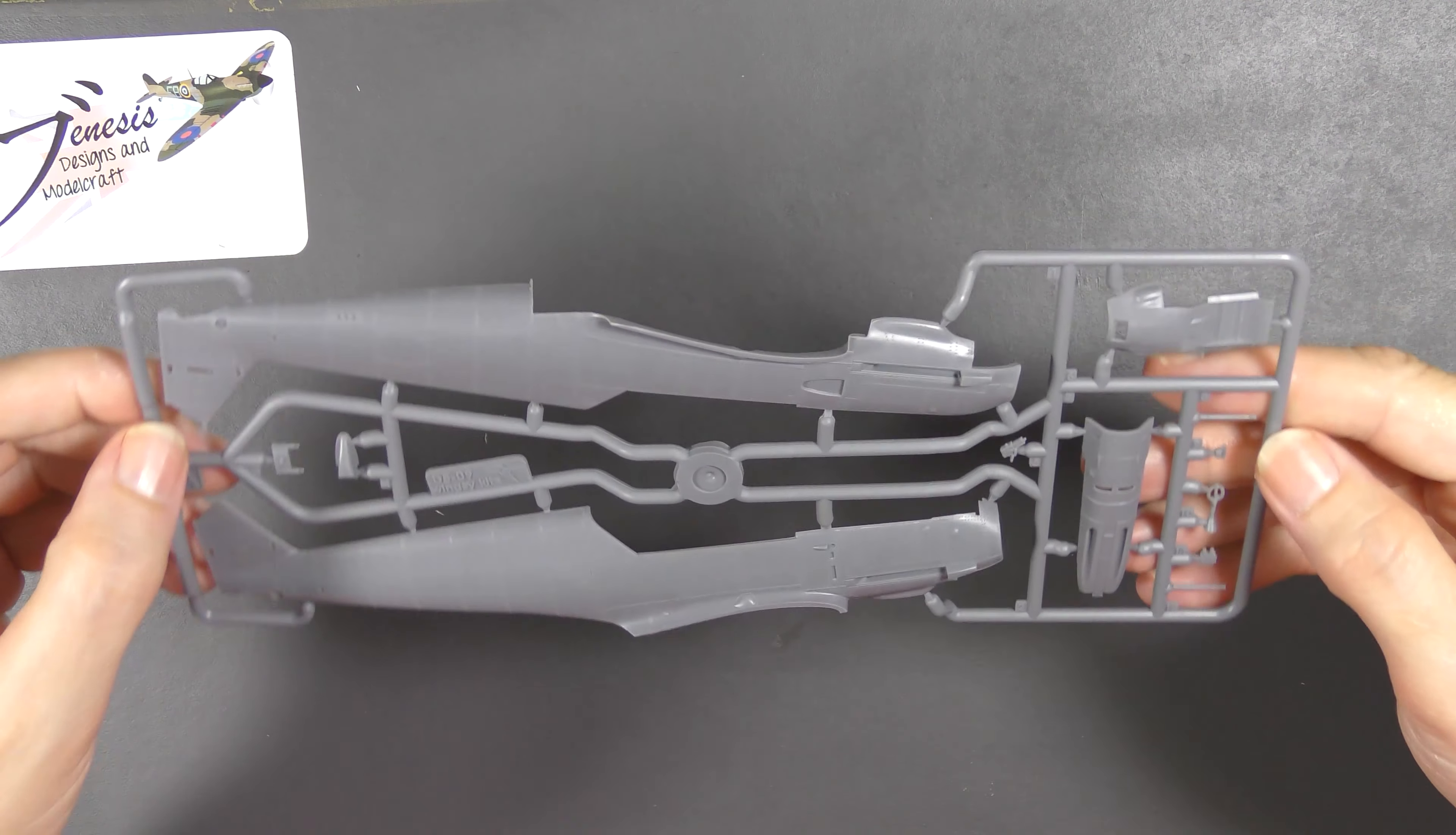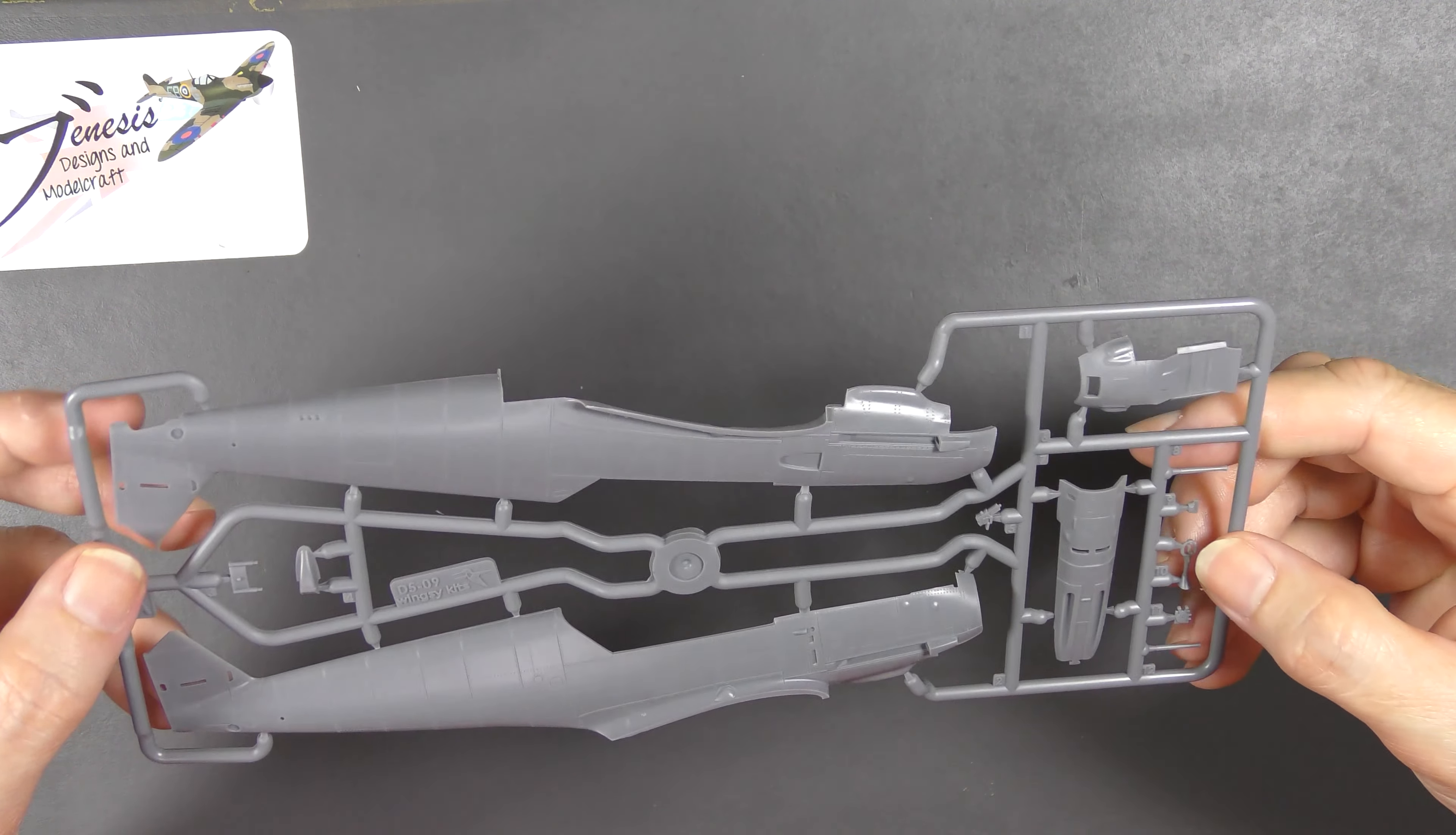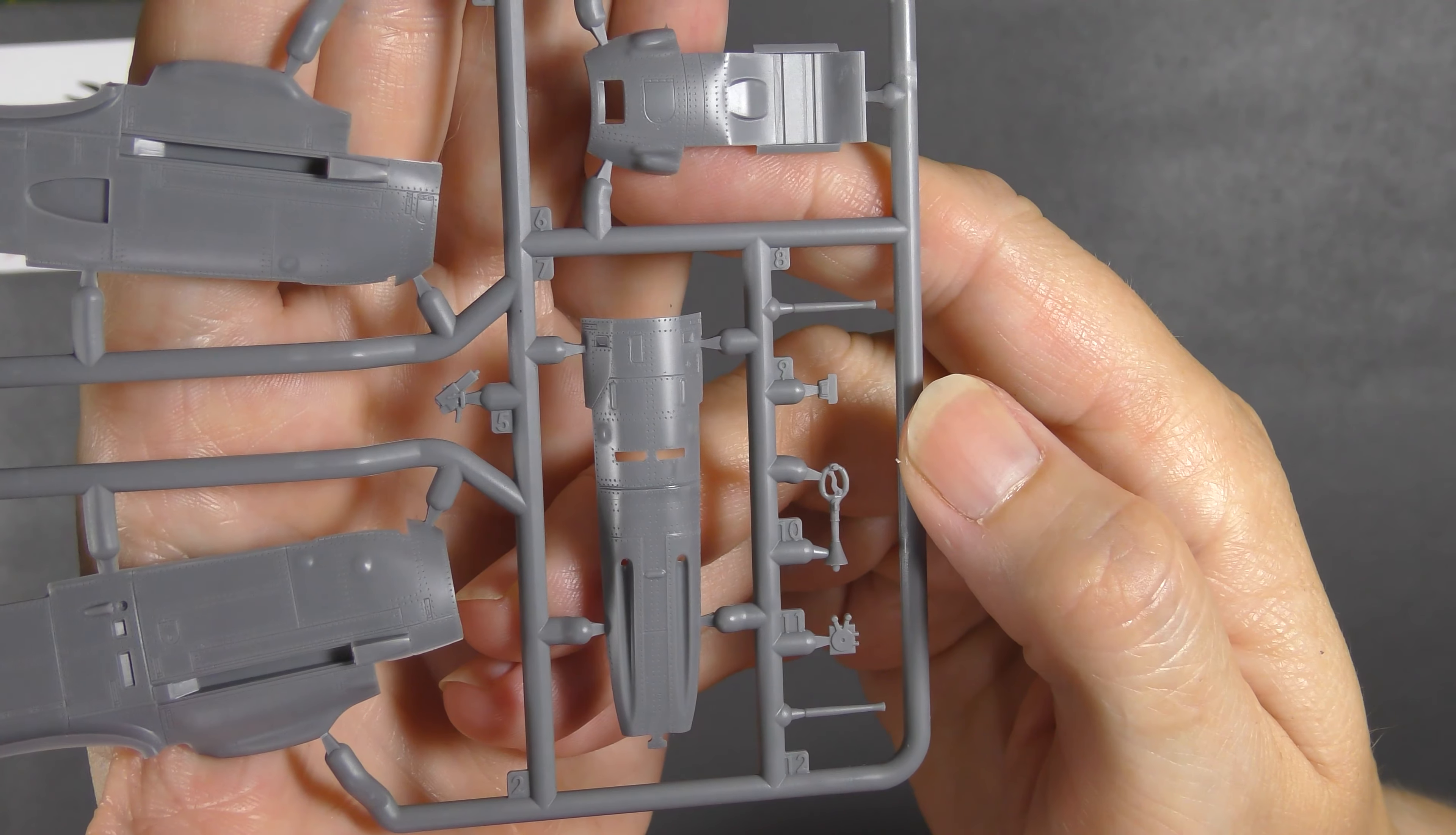Fuselage halves, engine top cowl and engine lower cowl, different type of control column there, and our side-mounted water cooler. It's all recessed detail, it's glorious. This looks - if it didn't say Wingsy kits on that tab and if it wasn't obviously relatively short-run technology sprue system, I think you'd swear blind this was an Eduard kit. That's how good this is, it's absolutely delightful.